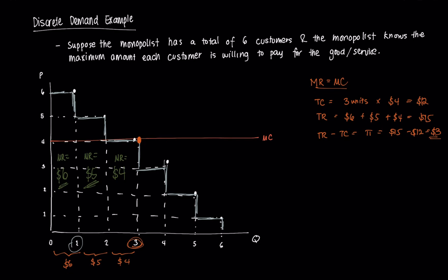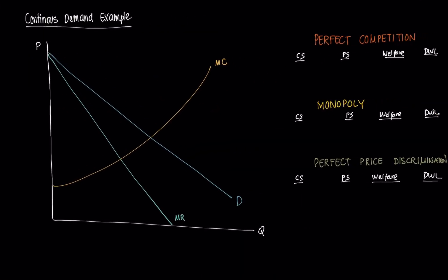What we'll notice is that in the next graph, the entire consumer surplus was extracted by this monopolist who practiced perfect price discrimination. This same type of analysis can be used for the more conventional continuous demand case. Let's recall a few concepts before we begin.